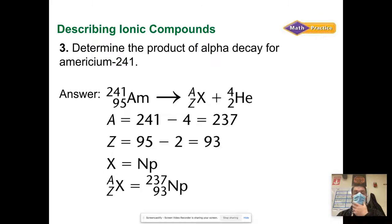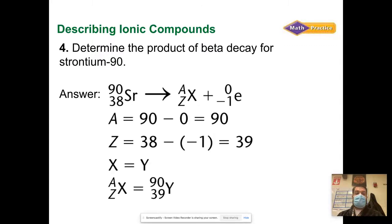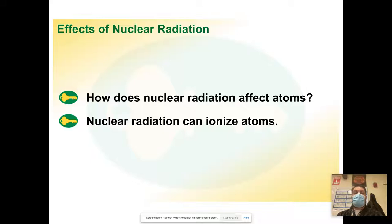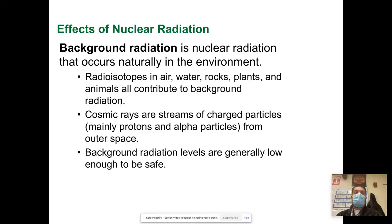I'm not going to go through all these. I'm going to leave these with you so you can take a look at them, but these are different types of decays. How does nuclear radiation affect atoms? Nuclear radiation can ionize atoms. These particles can collide with a stable atom and then have an impact on it. Background radiation is nuclear radiation that occurs naturally in the environment. Radioisotopes are out and about in the air, water, rocks, plants, animals, and they all contribute to background radiation. Cosmic rays are streams of charged particles, mainly protons and alpha particles from outer space. Background radiation levels are generally low enough to be safe.